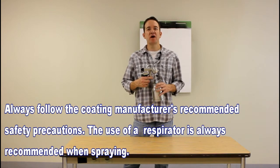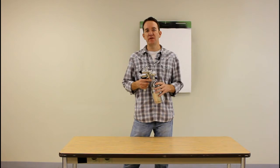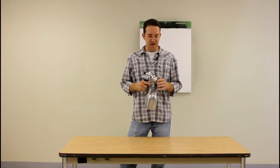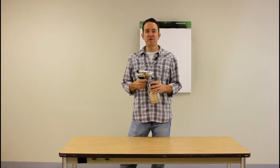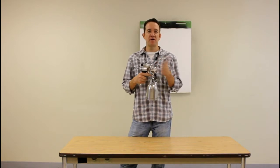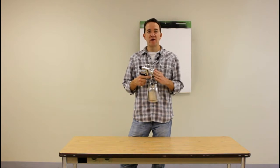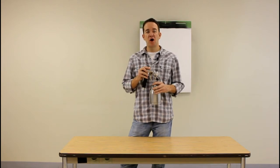Now this turbine spray gun is for non-bleed systems only, will not work on bleed style. Many of you have probably heard bleed non-bleed in the turbine arena and basically what that means is a non-bleed system when you let go of the trigger, both air and material stop coming out of the front of the gun. On a bleed style system, when you let go of the trigger, material stops but the air continually flows and so this will only work on a non-bleed system.